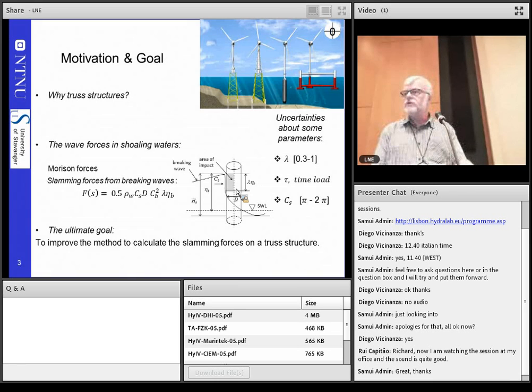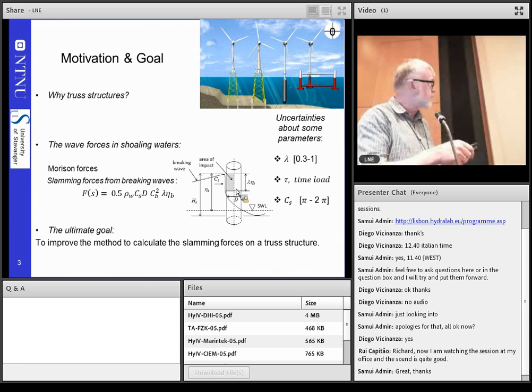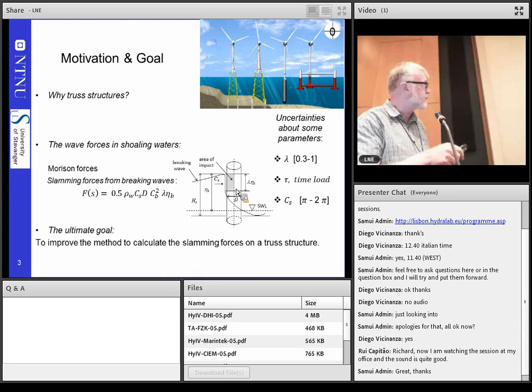So, why truss structures? Well, they seem very nice to have an option to the monopods, especially in shallow water, and the truss structure you see here, around here. This is some columns, and some bracing, and this part is what we have considered. We have not considered the load coming from the top structure of the wind turbine.